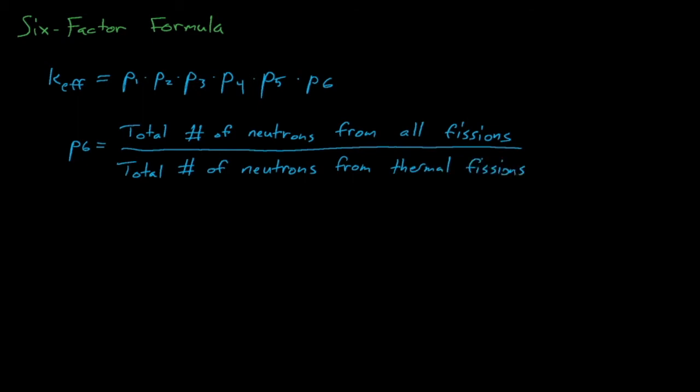P6 is the ratio of the number of fission neutrons that are created by fissions from neutrons of all energies, so fast plus thermal neutrons, divided by the number of fission neutrons produced by thermal neutron fission only. The combination of these six probabilities is known as the six-factor formula. It allows us to estimate the eigenvalue k-effective for our system.